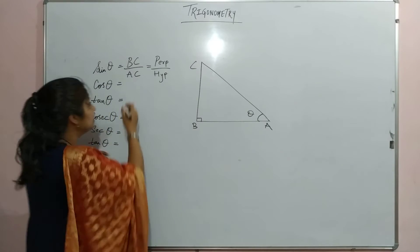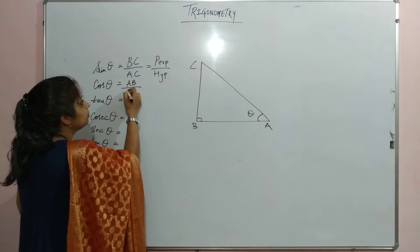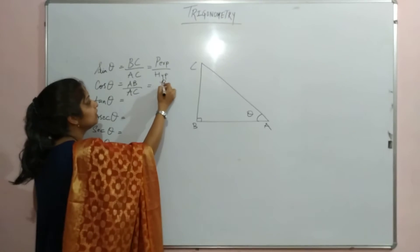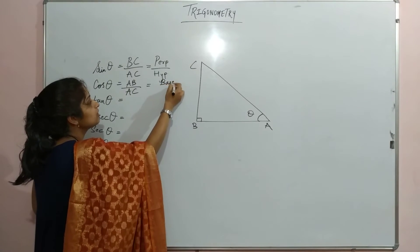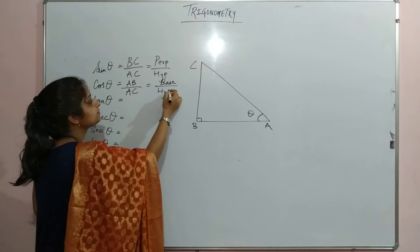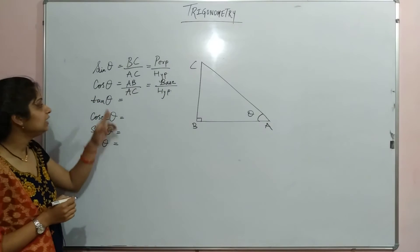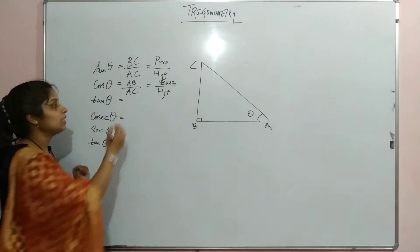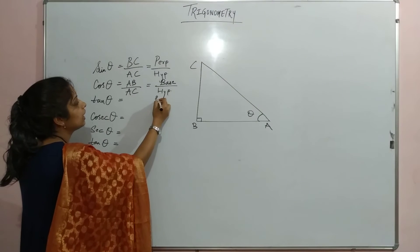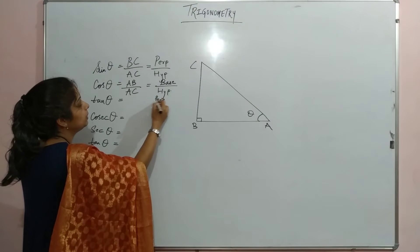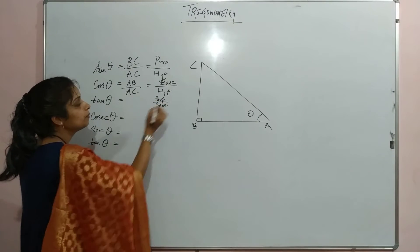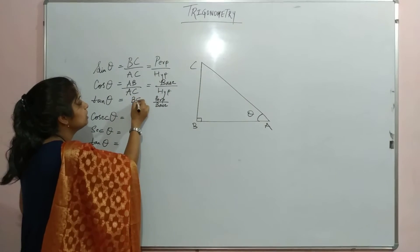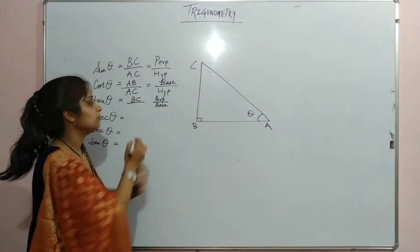Cosine theta equals AB upon hypotenuse AC, which can also be written as base upon hypotenuse. Tangent equals perpendicular upon base, which is BC upon BA.